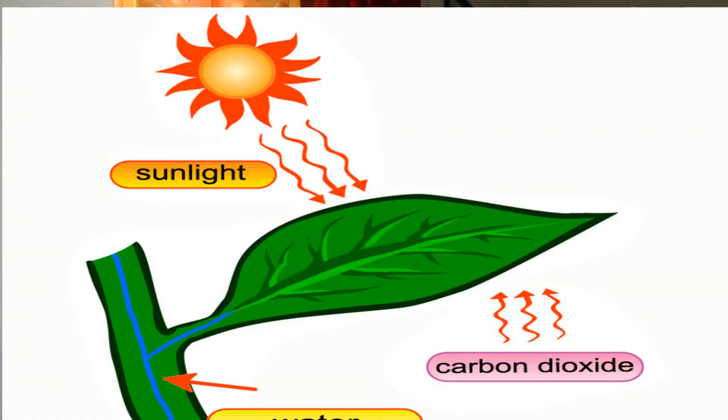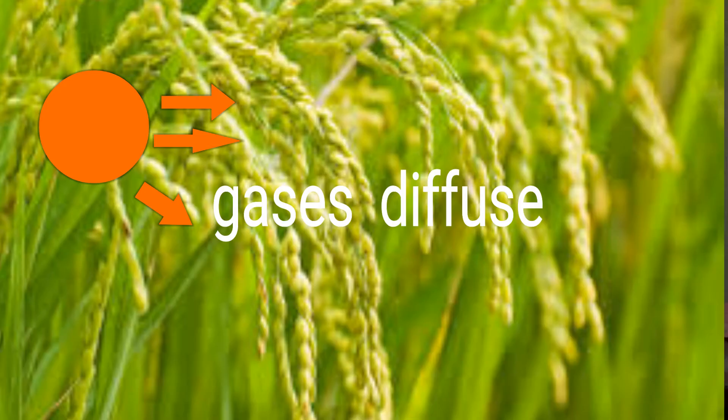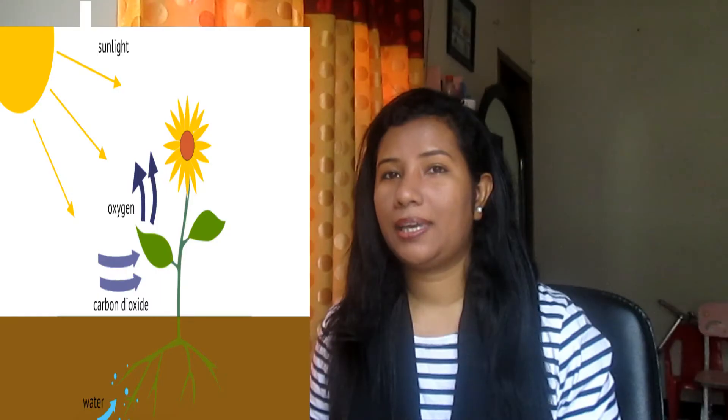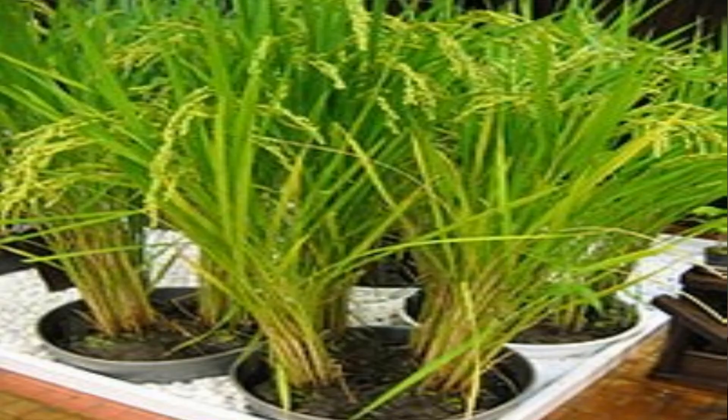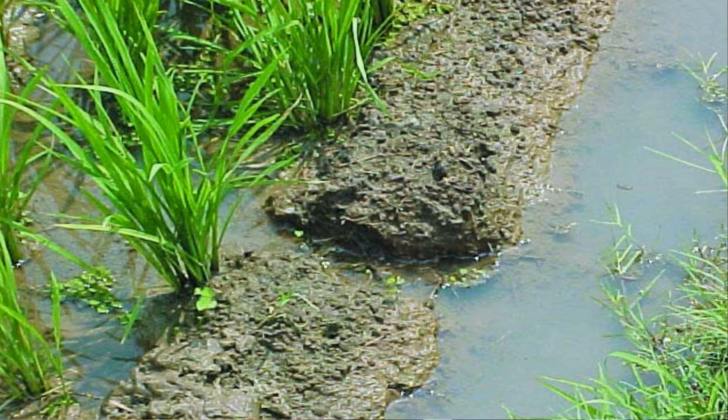This happens because gases diffuse much more slowly in water than they do in air. Moreover, the concentration of dissolved oxygen and carbon dioxide in water is much less than in air. This is especially true in paddy fields, where the rich mud in which the rice roots are planted contains large populations of microorganisms, many of which are aerobic and take oxygen from the water.